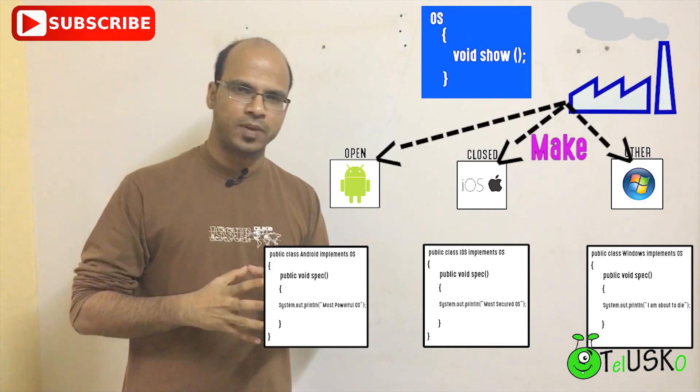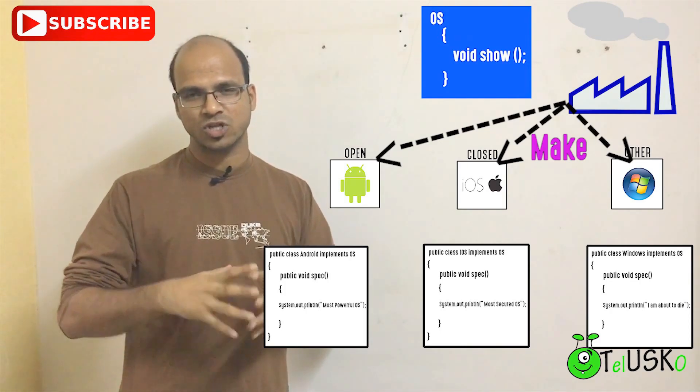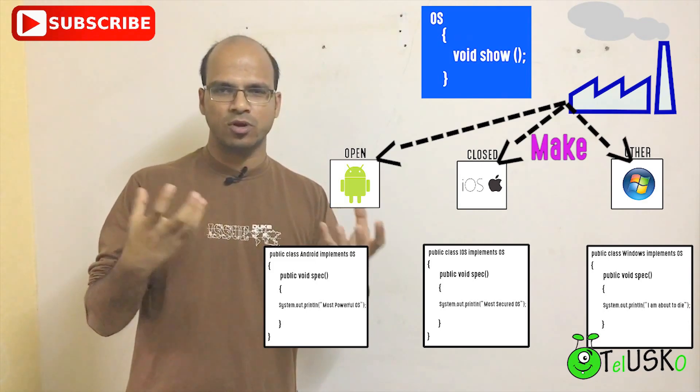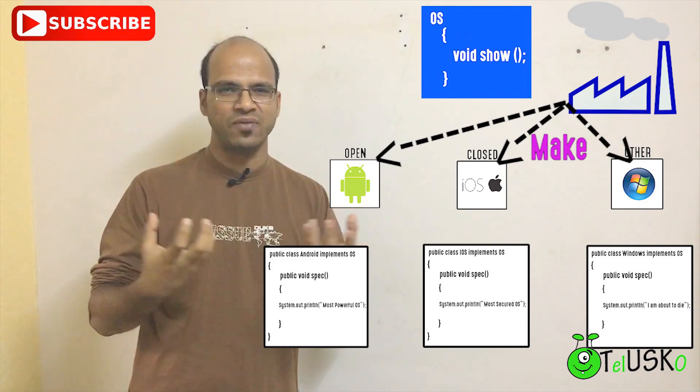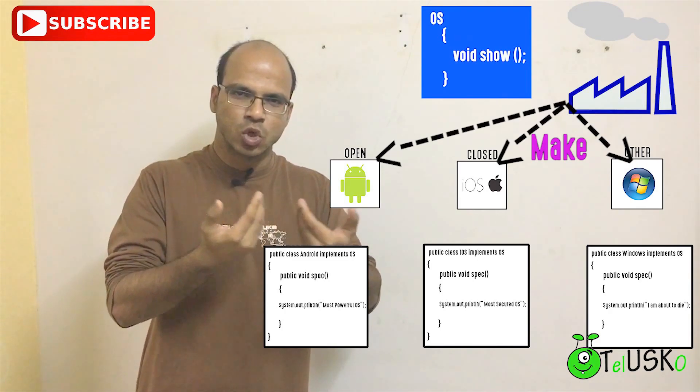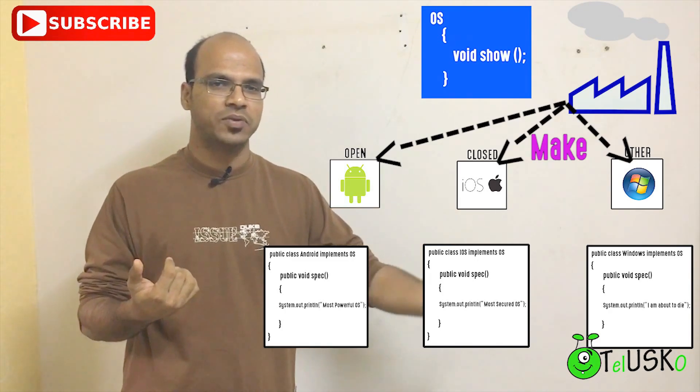When you talk about software development or software development life cycle or software engineering, whenever you build a project, you have to work with different modules. All these modules should have low coupling and high cohesion. If you want to achieve this low coupling, we use something called as factory.